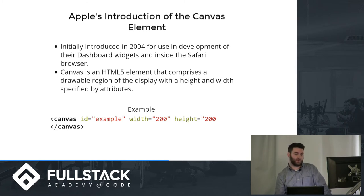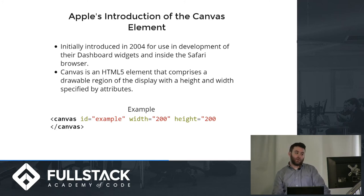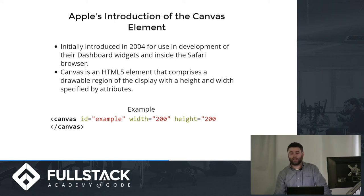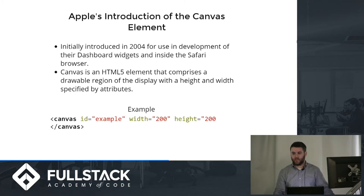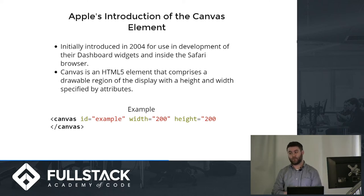The canvas element was initially introduced by Apple in 2004 as a proprietary element, meaning it was only for use in developing their widgets and their browser, Safari. This caused a lot of controversy. Developers complained that Apple should have supported the existing standard — SVG — and that if they were going to develop a new standard, they should have made it immediately open source, which they eventually did after much complaining.